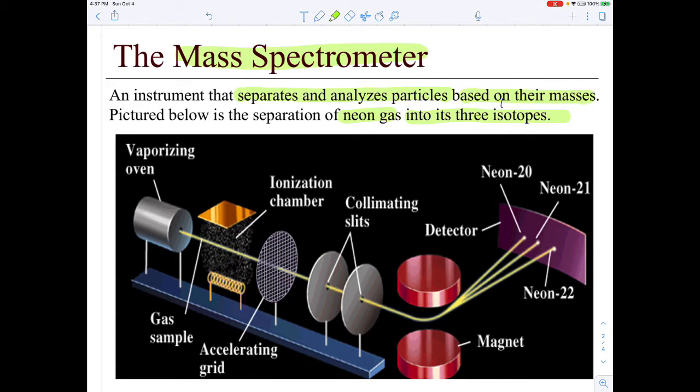So the mass spectrometer, if you inject a sample of neon atoms into the vaporizing oven on the left, the atoms will pass through and get hit. They'll go into the ionizing chamber that's next, where they get hit by x-rays. That causes them to become little charged neon atoms. The accelerating grid that's next has an opposite charge of the charged neon atoms, so they're attracted to it and they speed up.